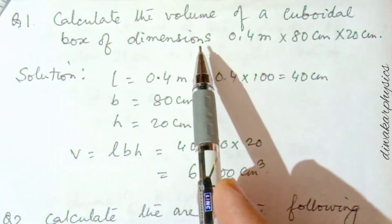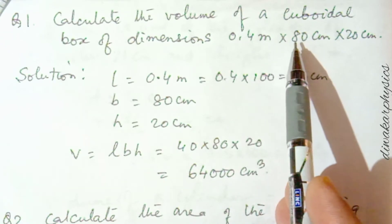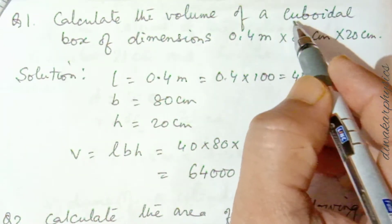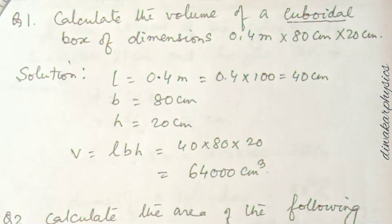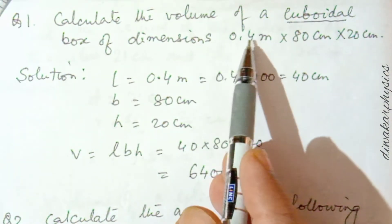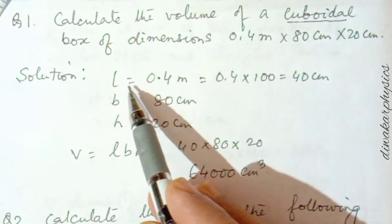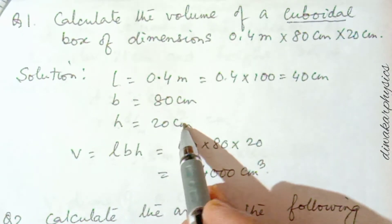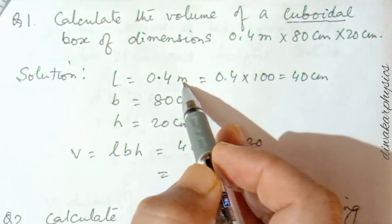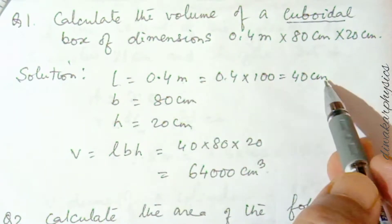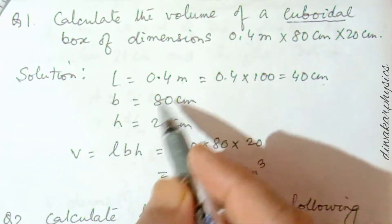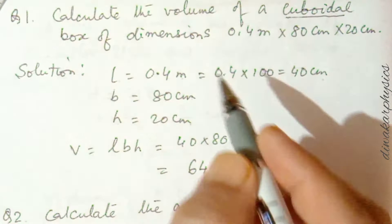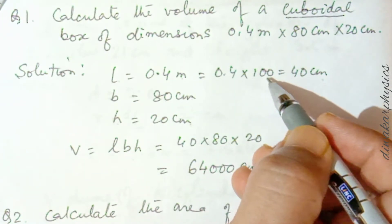The cuboidal box has dimensions 0.4 meter × 80 centimeter × 20 centimeter. The shape is cuboidal, so length is 0.4 meter, breadth is 80 centimeter, and height is 20 centimeter. Since these are in different units, we need to convert them. Converting one value is easier than converting two, so I convert 0.4 meter into centimeter: 0.4 × 100 = 40 centimeter.